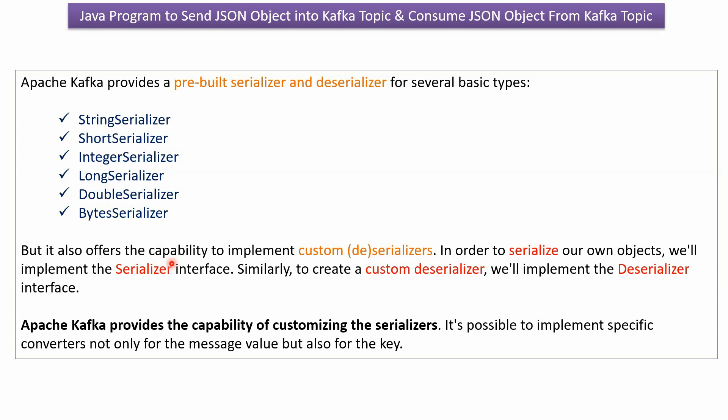Apache Kafka also offers the capability to implement custom serializers and custom deserializers. In order to serialize our own objects, we will implement the serializer interface. Similarly, to create a custom deserializer, we will implement the deserializer interface.